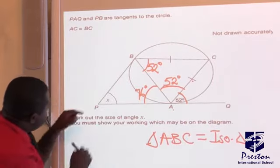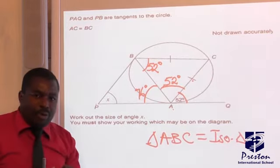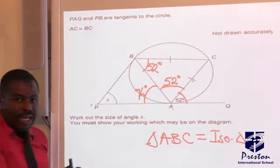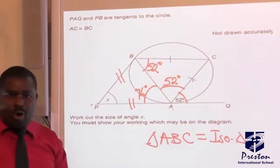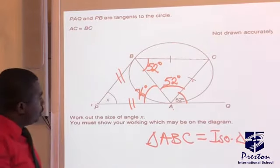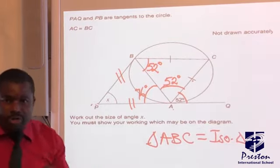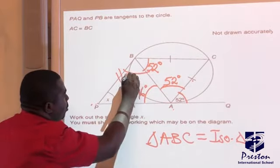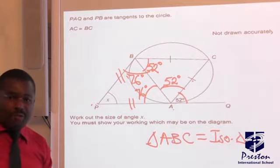Now look at PB and PA. They are tangent coming from a circle and meeting at a point here. It means this line and this line, they are equal. According to the triangle, if they are equal, that means triangle APB is also an isosceles triangle. That will give us this angle to be 76 degrees.